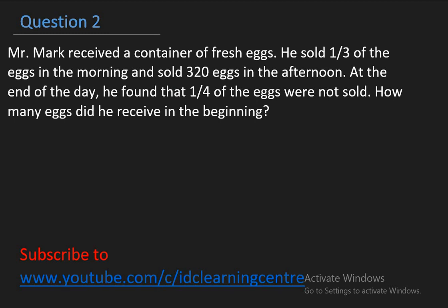Question two. Mr. Mark received a container of fresh eggs. He sold one third of the eggs in the morning, and sold 320 eggs in the afternoon. He found that one quarter of the eggs were not sold. How many eggs did he receive in the beginning?